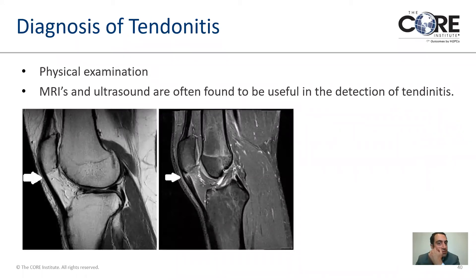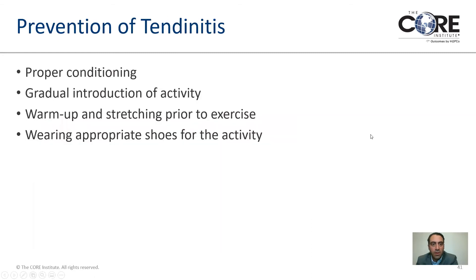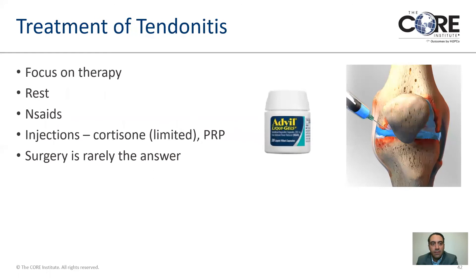Tendinitis is mostly diagnosed through physical exam. MRI and ultrasound can help us quantify cases that just don't want to get better — that's when we go to MRI to assess the level of injury. You can see the difference here between a healthy patellar tendon on the left and an inflamed, highly painful tendon on the right. Treatment involves proper conditioning and a gradual return to activity, a proper warm-up and stretching program, and making sure you have the right shoes or orthotics if needed. Cortisone injections are limited when it comes to tendons because the steroid can be damaging to the tendon structure. Surgery is rare, and again, using PRP as a new modality is gaining favor and more studies are coming.